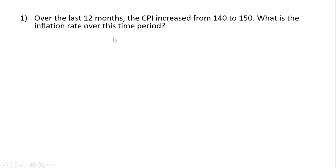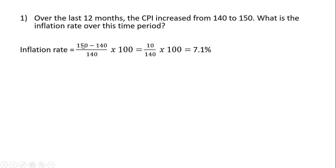Question one. Over the last 12 months, the consumer price index increased from 140 to 150. What is the inflation rate over this time period? To calculate the inflation rate, we're going to use a percentage change formula that looks at the ending value — in this case, the last value of the CPI here is 150 — minus its starting value, divided by its starting value, then multiplied by 100. So 150 minus 140 is 10. 10 divided by 140, then multiplied by 100, gives us an inflation rate of 7.1%.